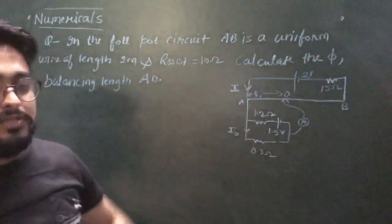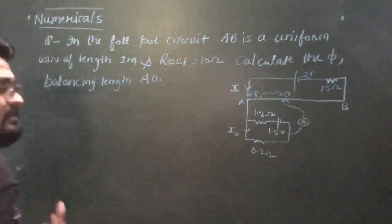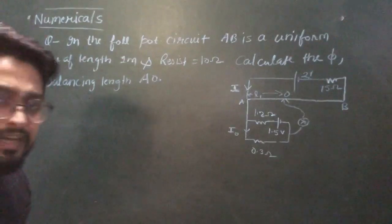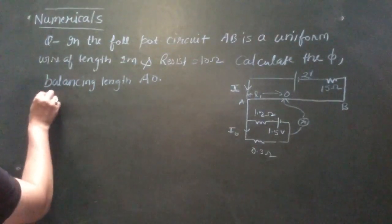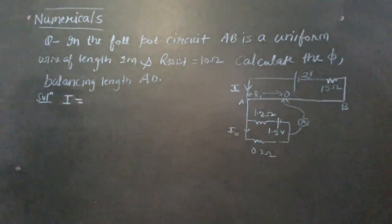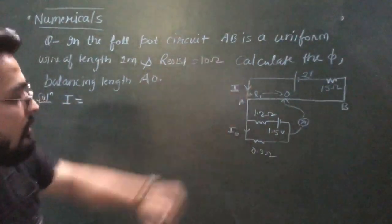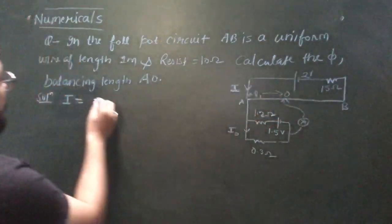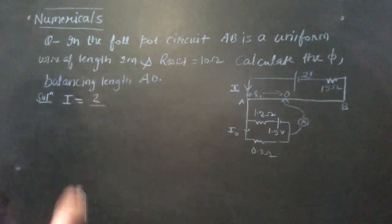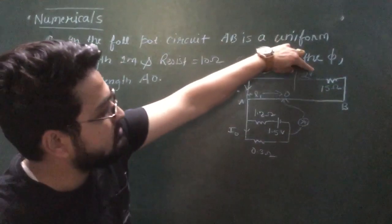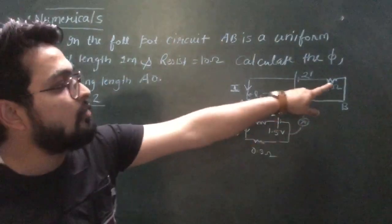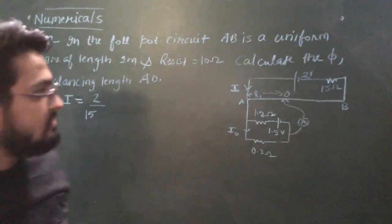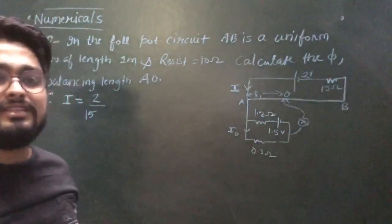So these two circuits are independent — no current is exchanged between them. What I will do is calculate the current easily. The current I equals the voltage of this battery divided by the total resistance. Total resistance is 15 plus the resistance of wire AB, which I assume is RAB. These two are in series.